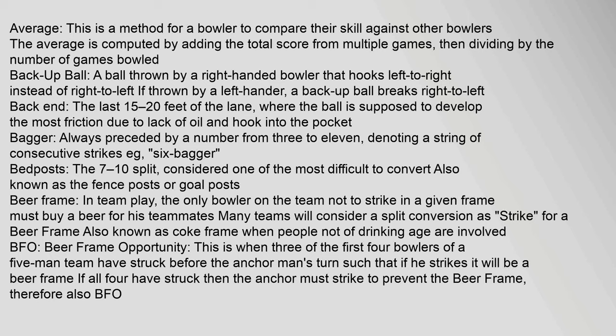Back end: the last 15 to 20 feet of the lane, where the ball is supposed to develop the most friction due to lack of oil and hook into the pocket. Bagger: always preceded by a number from 3 to 11, denoting a string of consecutive strikes — e.g., six bagger. Bedposts: the 7-10 split, considered one of the most difficult to convert; also known as fence posts or goal posts. Beer frame: in team play, the only bowler on the team not to strike in a given frame must buy a beer for his teammates.